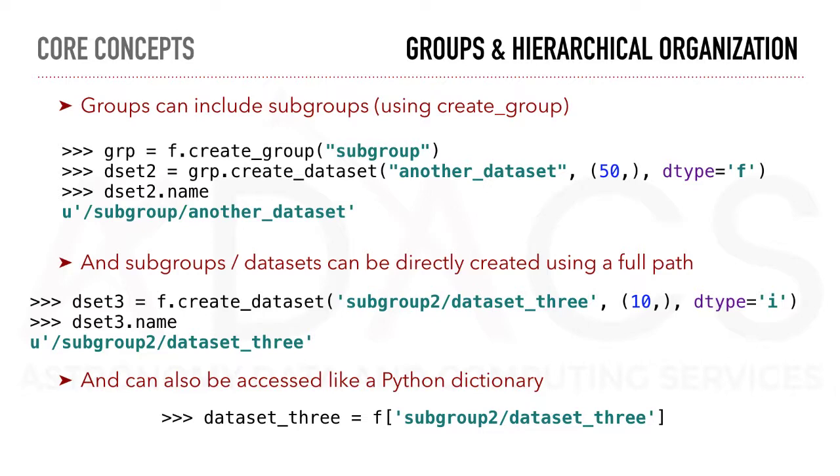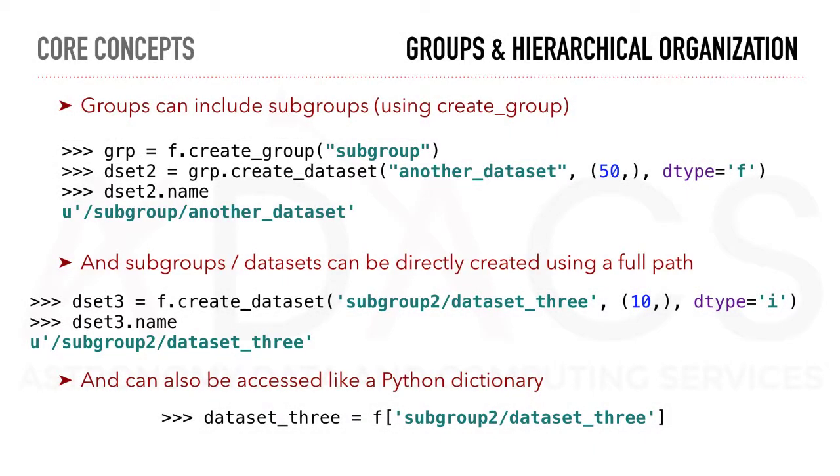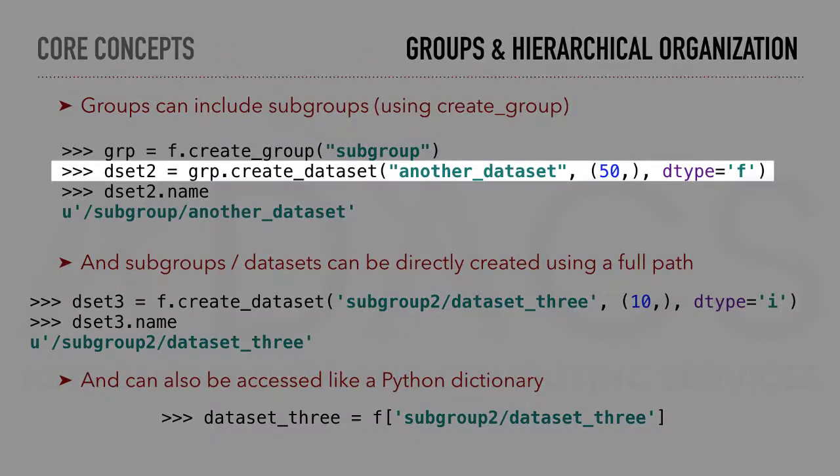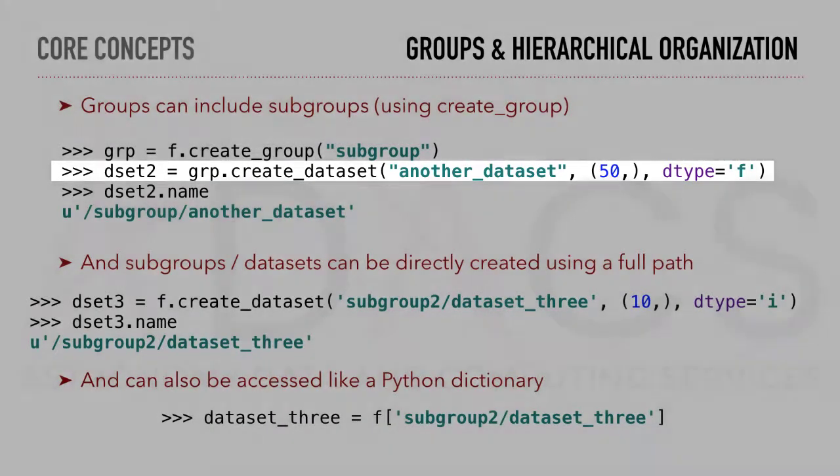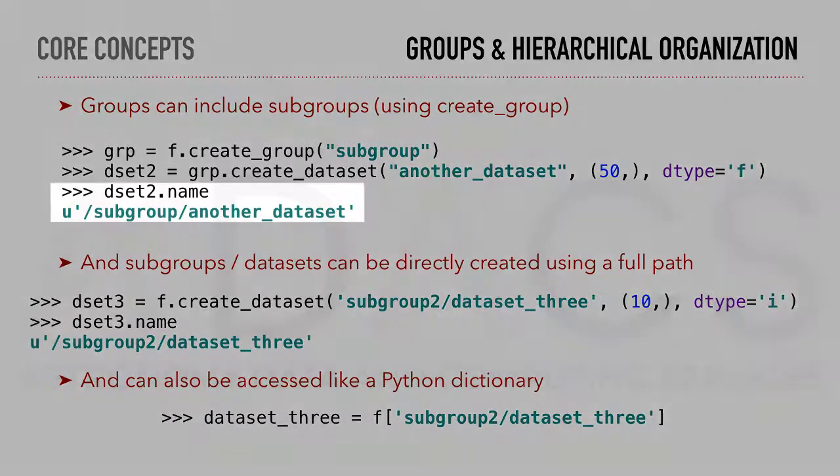Groups can include subgroups using the function create_group. For example here, f.create_group subgroup will give us a subgroup. Similarly, subgroups can include datasets. Here we add another dataset to subgroup. We can confirm that it has been added to subgroup by looking at the name property of this new dataset.